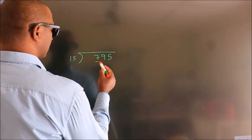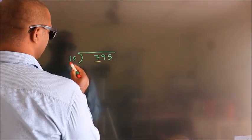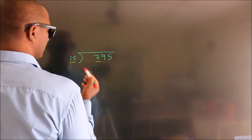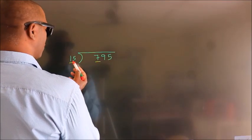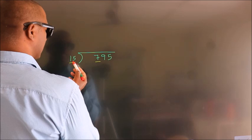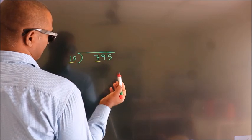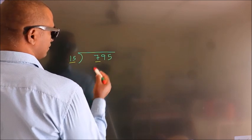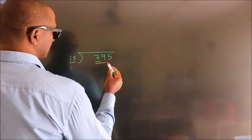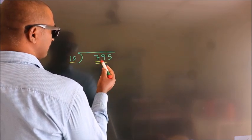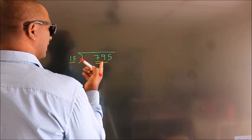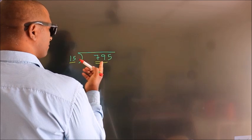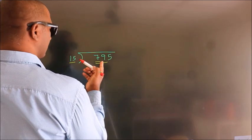Here we have 7. Here 15. 7 is smaller than 15, so we should take two numbers: 79. A number close to 79.